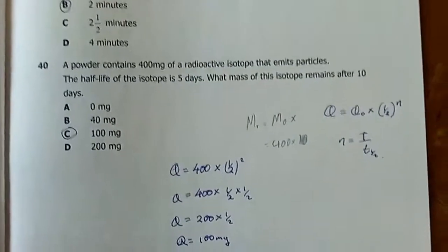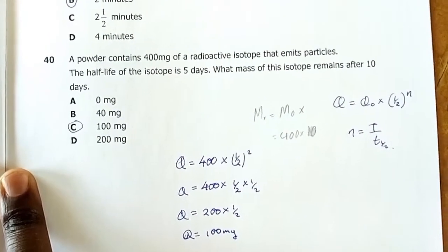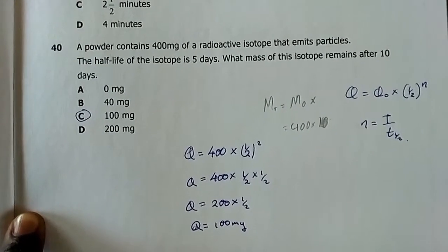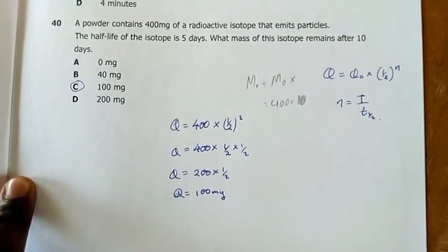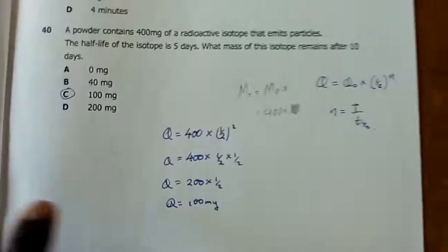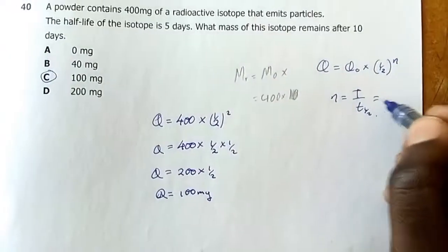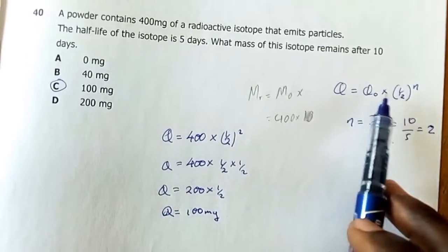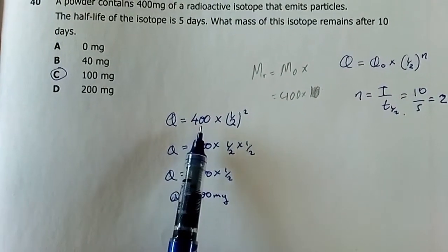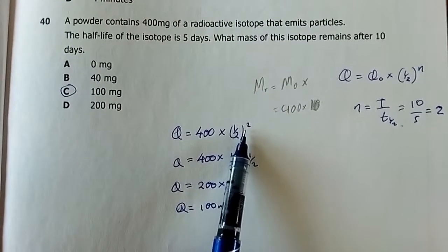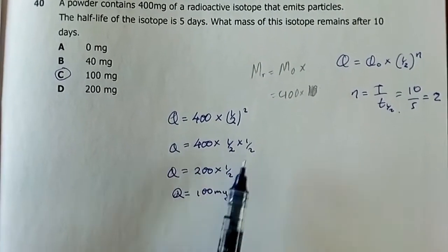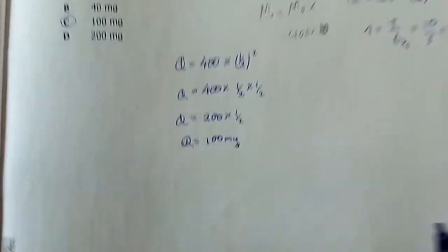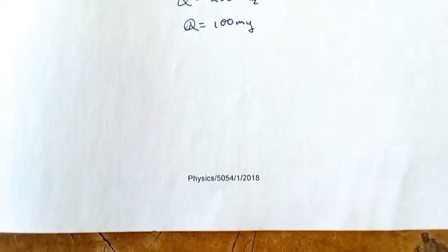Question 40: A sample contains 400 mg of a radioactive isotope with a half-life of 5 days. What mass remains after 10 days? Number of half-lives = 10/5 = 2. Using the formula: remaining = original × (1/2)^n = 400 × (1/2)² = 400 × 1/4 = 100 mg. Answer is C. This marks the end of the 5054 2018 Paper 1 Physics. Have a good study time!